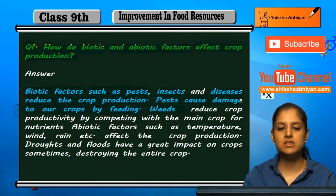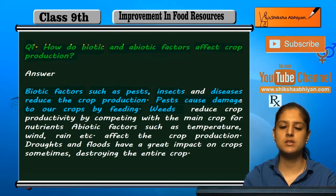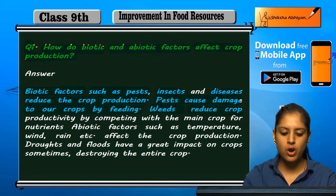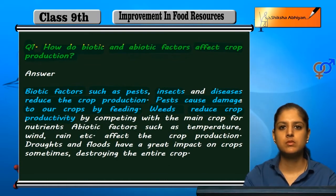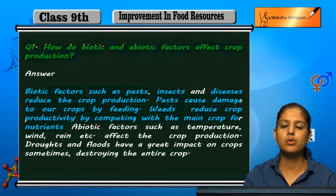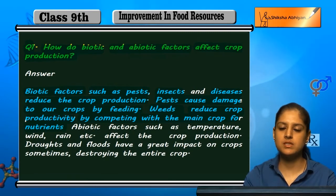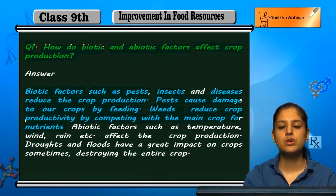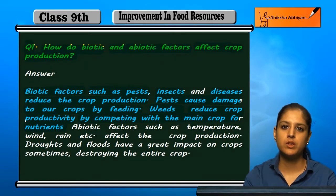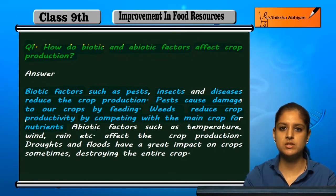If weeds grow, they reduce the productivity of the crop by competing with the main crop for nutrients. The weeds also need nutrients and start taking them from the main crop. Therefore, the main crop becomes deficient in nutrients and crop production is reduced.